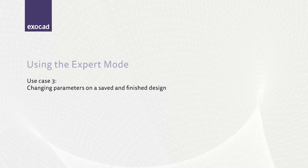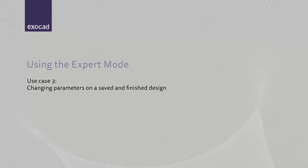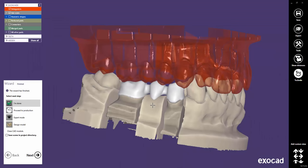The third sample case is a very common example. Imagine you have produced the restoration, but the fit does not meet your expectations. You would now like to change the cement gap settings, and maybe the insertion direction for a saved case. I have loaded a scene file from the DentalDB. The wizard is started automatically. Let's switch to the Expert Mode.